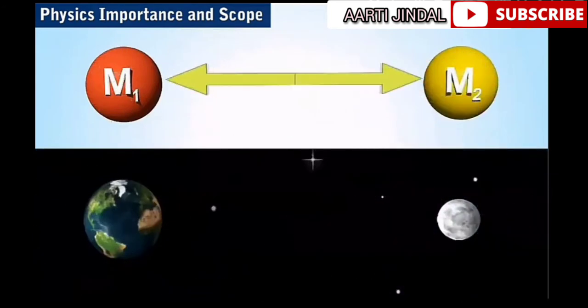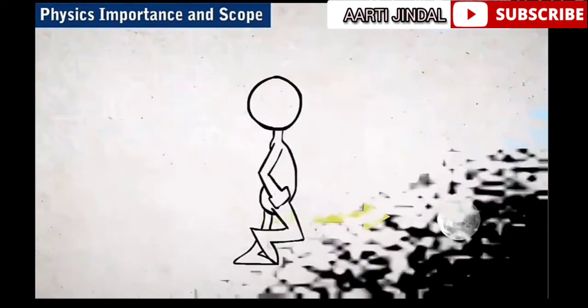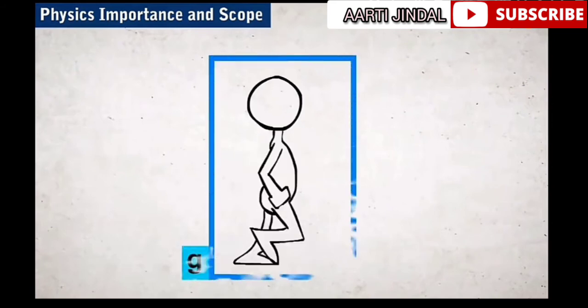The gravitational force is the force of mutual attraction between any two objects by virtue of their masses. It is a universal force, meaning all objects in the universe exert gravitational force on each other. We are able to stand or walk due to Earth's gravitational force.